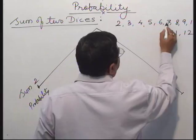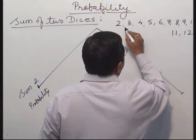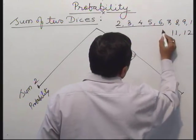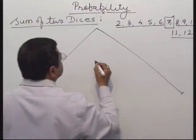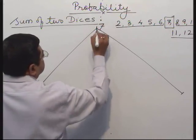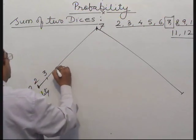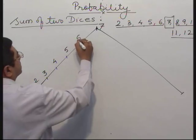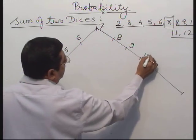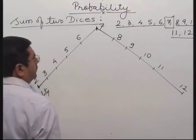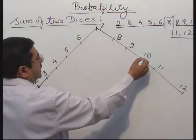There are 11 sums total. If you leave 5 on each side, the middle one is 7. So you write sum 7 at the top of the triangle. Then going down: 2, 3, 4, 5, 6, 7, 8, 9, 10, 11, 12. For probability, write: 1, 2, 3, 4, 5, 6 going up to 7, then reduce it: 5, 4, 3, 2, 1.